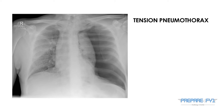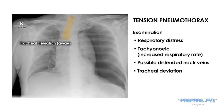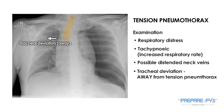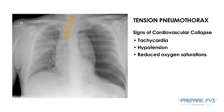With a tension pneumothorax on examination, you may expect to find that the patient will be in respiratory distress. They may be tachypneic. They may have distended neck veins. Their trachea will be deviated away from the side of the pneumothorax — this deviation is now marked on the x-ray. You may expect to find tachycardia, hypotension, and poor oxygen saturations.